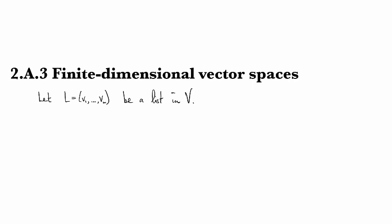Let's talk about what it means for a vector space to be finite dimensional. We let L be a list in V consisting of v1 through vm, some vectors from V. We saw what the span of a list was in the last video clip. If the span of L is equal to a vector space, then we say that L spans V. That's what it means to say that a list spans a vector space.